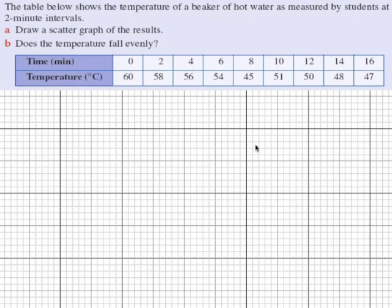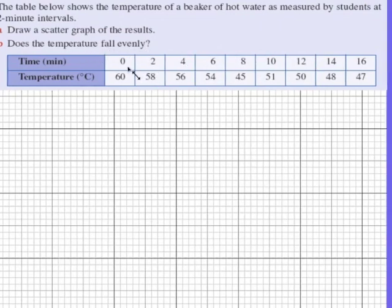So now let's look at an example of how a scatter graph can help us interpret some results. Some students are doing an experiment. They have a beaker of hot water. And they're measuring the temperature every two minutes to see if it falls evenly. Our independent variable is time. So that goes along the horizontal axis. And the temperature is the dependent variable.